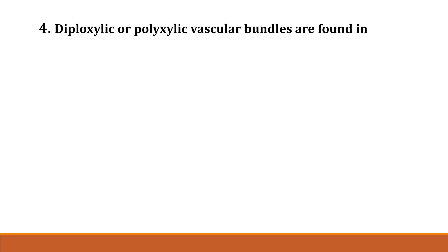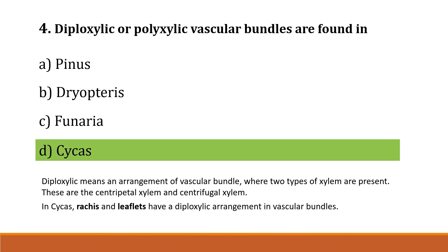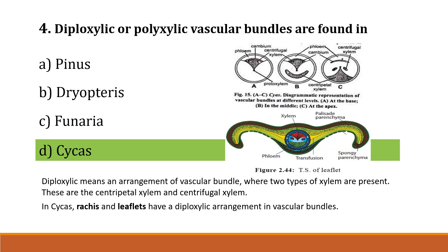Question number 4: Diploxylic or polyxylic vascular bundles are found in Option A: Pinus, Option B: Dryopteris, Option C: Phonaria, Option D: Cycas. The correct answer is Option D, Cycas. Diploxylic means an arrangement of vascular bundles where two types of xylem are present — centripetal xylem and centrifugal xylem. In Cycas, the rachis and leaflets have diploxylic arrangement in vascular bundles. Two types of vascular bundles are present: centripetal and centrifugal — that is called diploxylic vascular bundle.